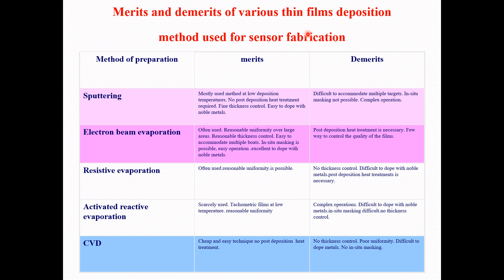We specified that there are different methods for the preparation of thin films. We discussed sputtering techniques, electron beam evaporation, resistive evaporation, activated reactive evaporation, and CVD techniques. These are all part of the deposition process for thin films. All these techniques have merits and demerits when utilized for fabrication of thin films for sensor applications. Let's look at what the merits and demerits of each particular technique are.